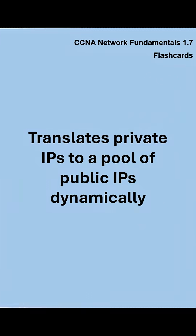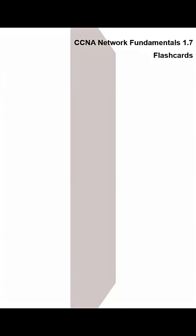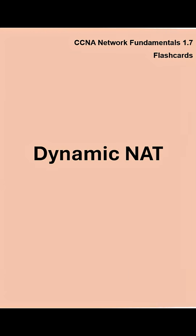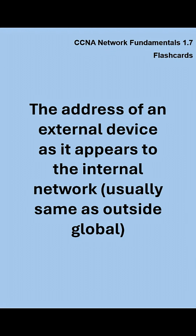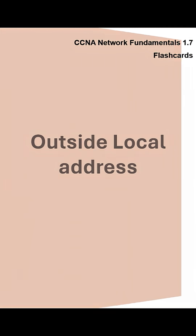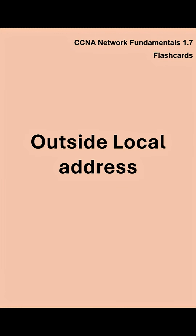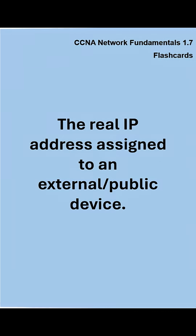Dynamic NAT translates private IPs to a pool of public IPs dynamically. The outside local address is the address of an external device as it appears to the internal network, usually the same as the outside global. The outside global is the real IP address assigned to an external or public device.